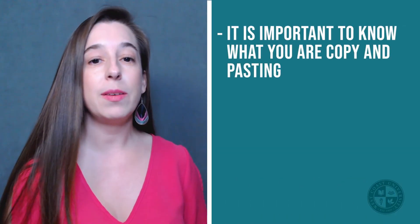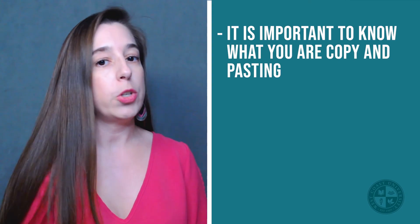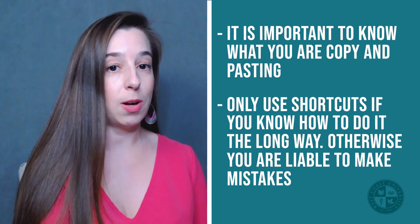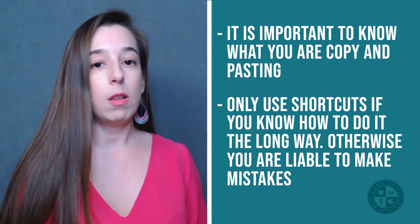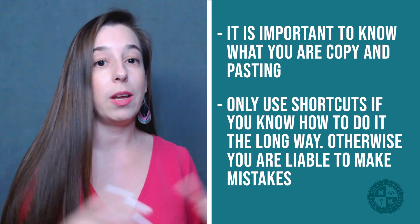Whether you're researching on Google Scholar or in library databases, there is always somewhere you can copy the reference from. But it's important to actually know what it is that you're copy pasting. You should only use shortcuts if you know how to do it the long way, because otherwise you're liable to make mistakes. These shortcuts are created by a machine, not a human being, so there are often errors and it's up to you to spot them — for instance, the missing DOI number. If you don't know what's supposed to be in the reference, you won't be able to spot what's missing or slightly off.